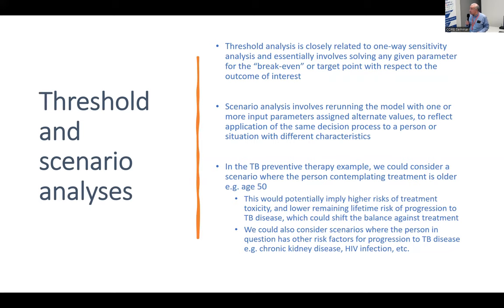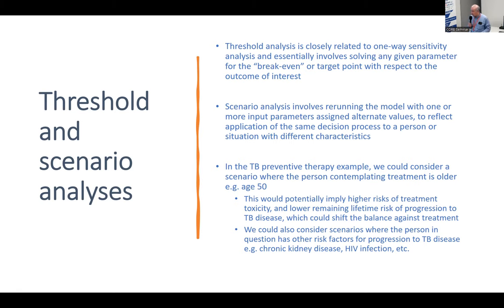For example, in the TPT scenario just given, we could consider a different reality where the person contemplating treatment is 50 — with higher risks of treatment-related toxicity and fewer lifetime years during which they could progress to TB disease — which could shift the balance between recommending or not recommending preventive treatment. We could also consider scenarios where the person has other risk factors for TB progression, such as chronic kidney disease or HIV co-infection. These are examples of scenario analysis.